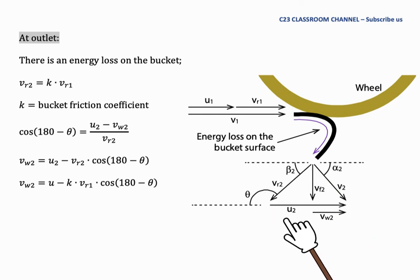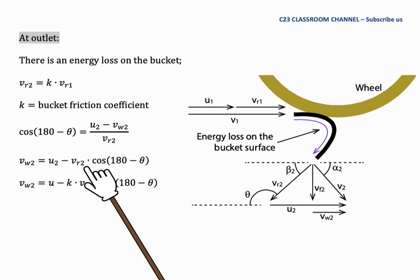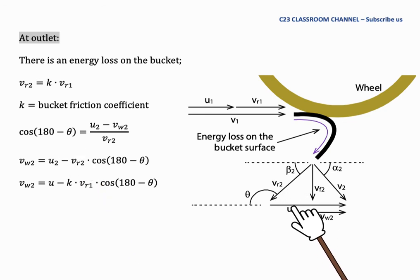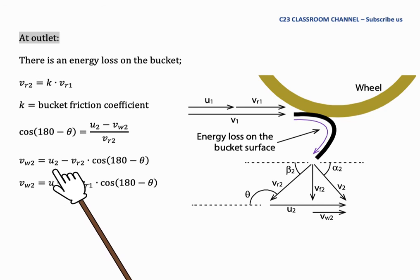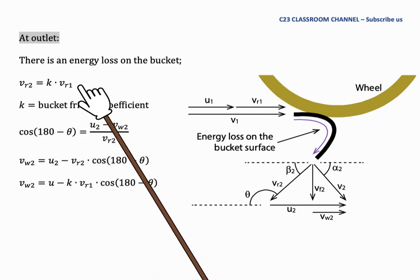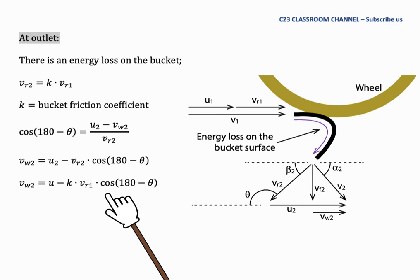From the velocity triangle, the angle at the outlet is theta, and the supplementary angle is 180 minus theta. Using trigonometry: cos(180° − θ) equals (U2 minus VW2) divided by VR2. Rearranging gives VW2 equals U2 minus VR2·cos(180° − θ). Substituting VR2 = K·VR1, the final equation becomes: VW2 equals U2 plus K·VR1·cos(180° − θ).